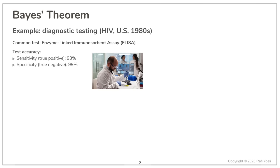We are in the U.S., it's the 1980s and people are being tested for AIDS. The common test is called enzyme-linked immunosorbent assay, or in short, ELISA.